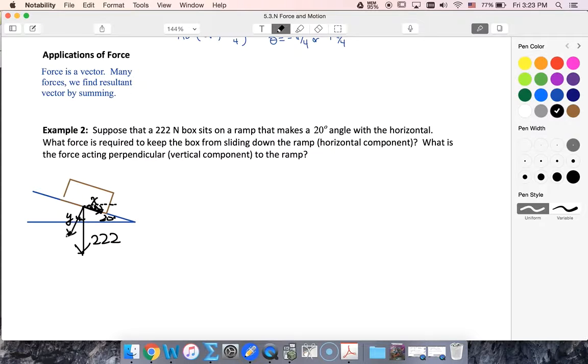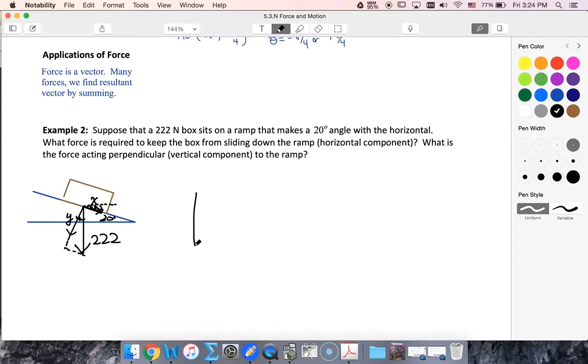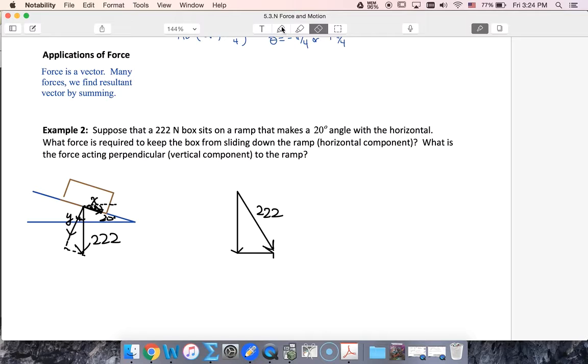So if I extend this out to make a right triangle, here's my right triangle with my x, y, and my 222. So let's draw that in a more traditional sort of sense. There we go. So there's my y. Here's my x. Here's my force of 222. Let me erase all these things.